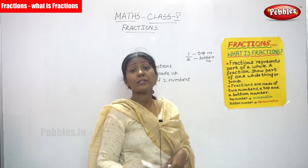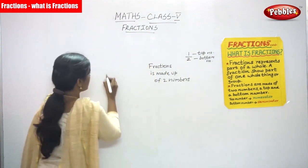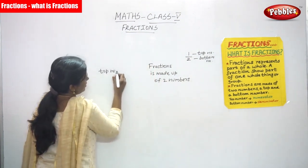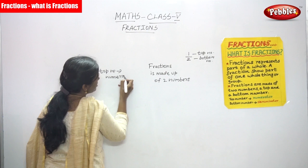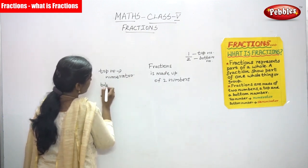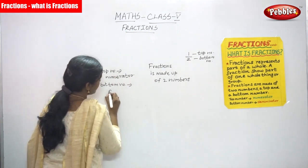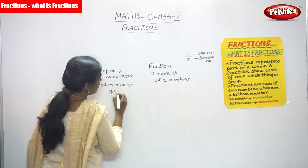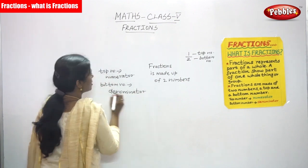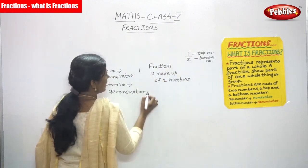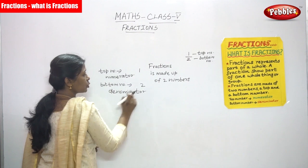Top number is called as numerator — N-U-M-E-R-A-T-O-R — numerator. And bottom number is called as denominator — D-E-N-O-M-I-N-A-T-O-R — denominator. For this fraction, the top number is 1 and the bottom number is 2. So, top number 1 is the numerator and bottom number 2 is the denominator.